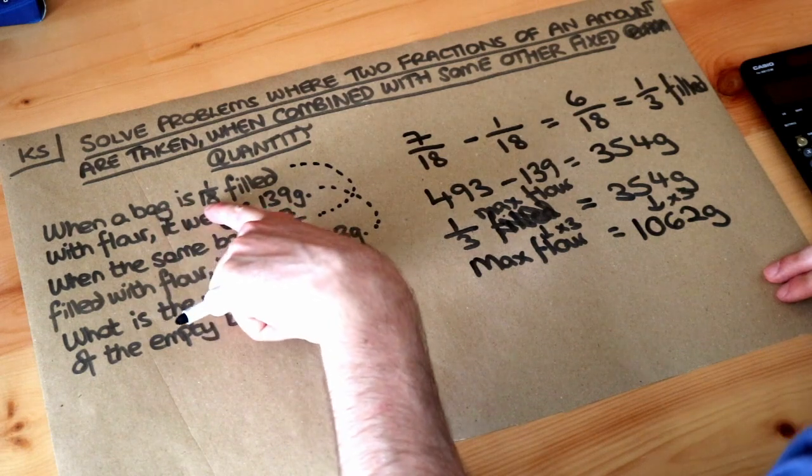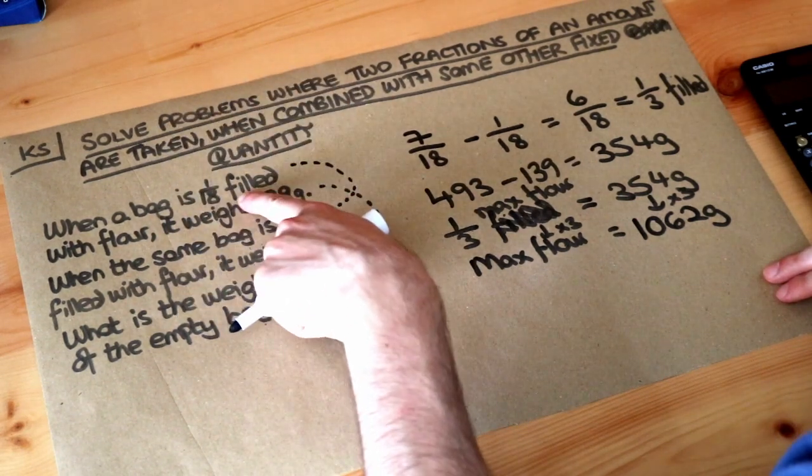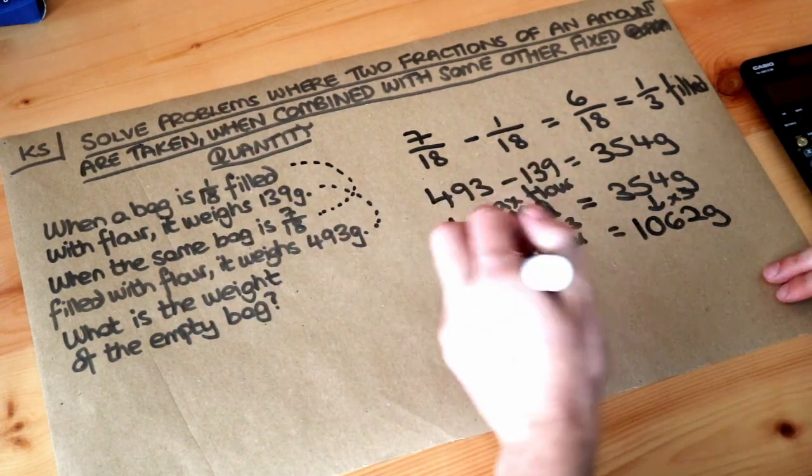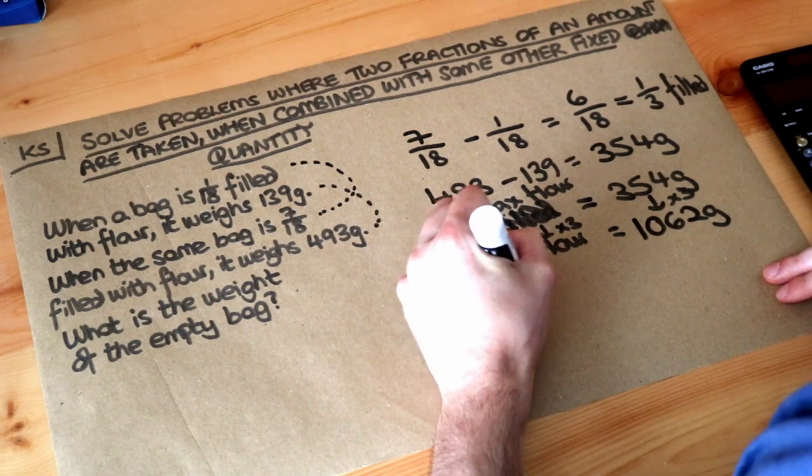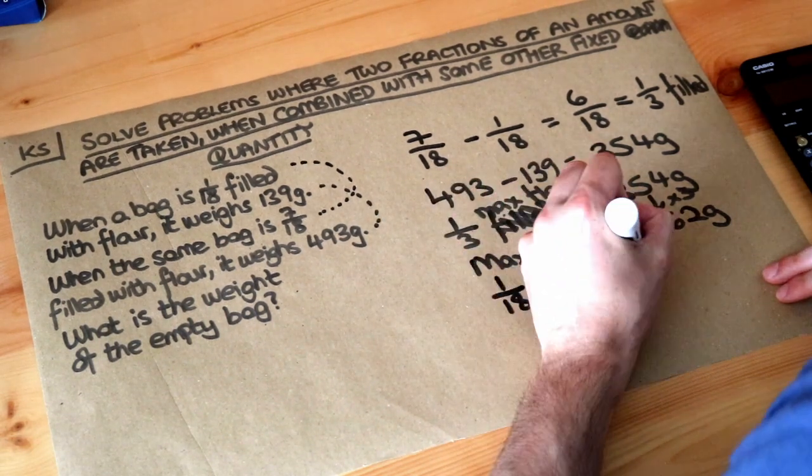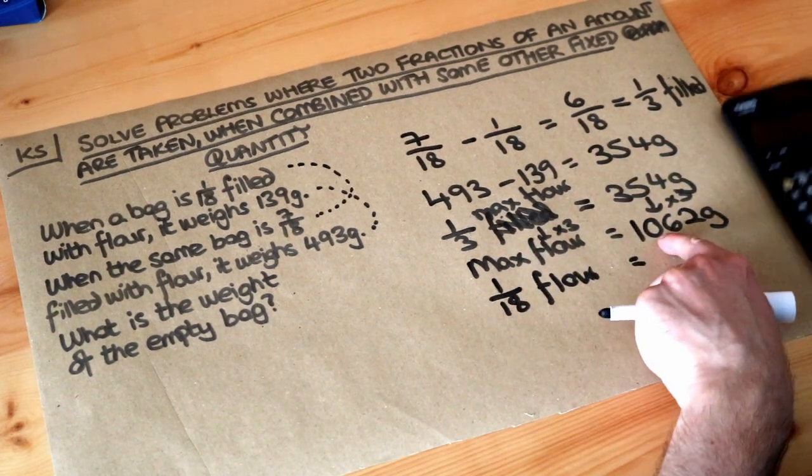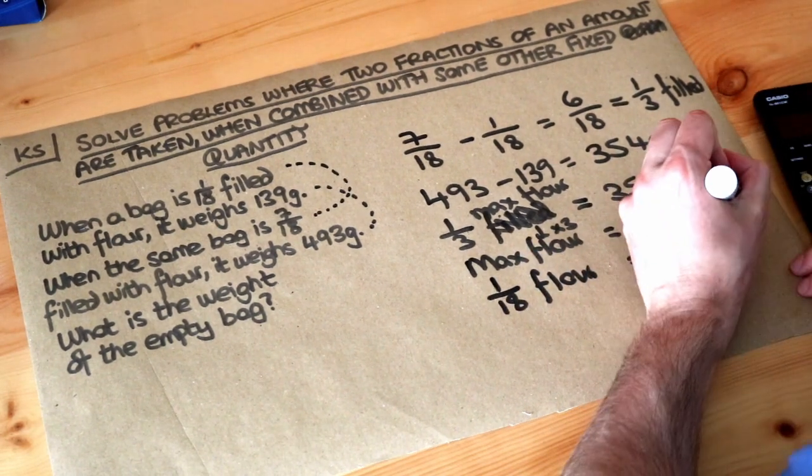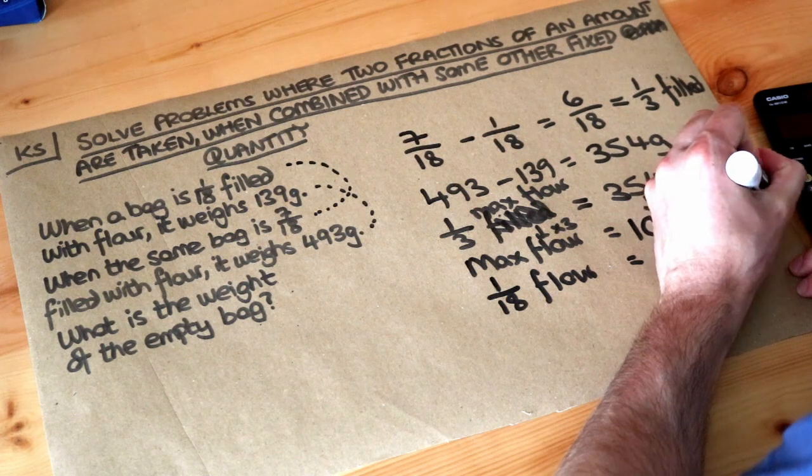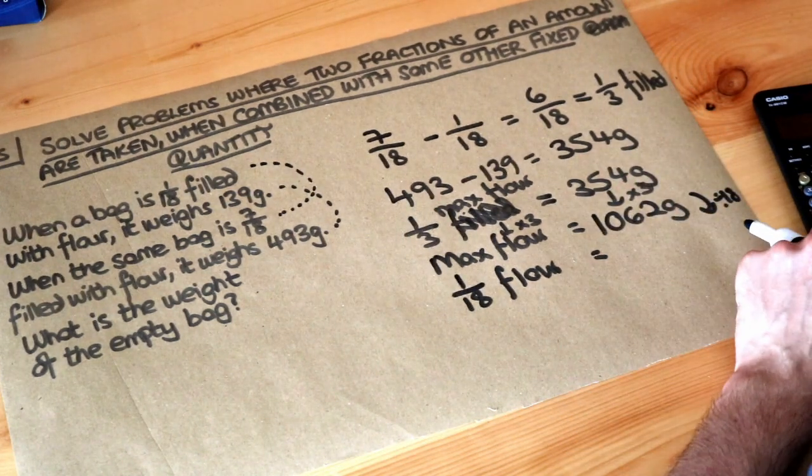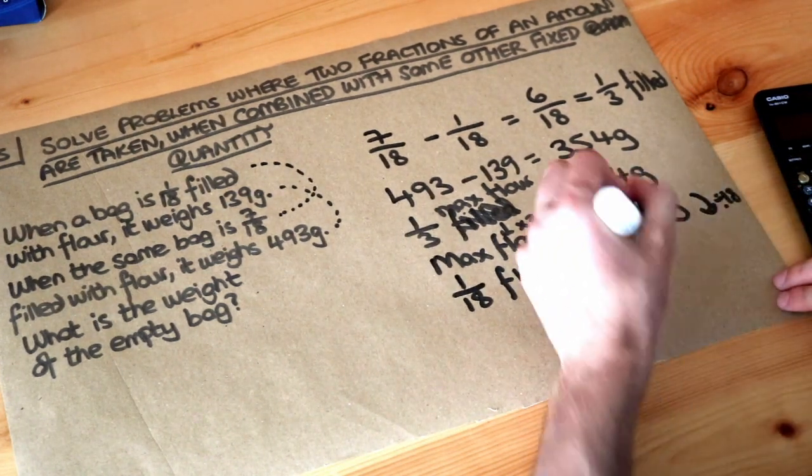Now we know that the empty bag plus 1/18th of the bag filled with flour would weigh 139 grams. So let's find what 1/18th of the flour is. Well we just need to divide that by 18. So we do 1062 divided by 18 and that's 59 grams.